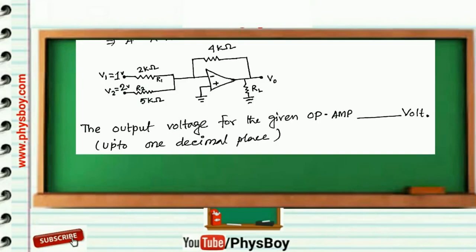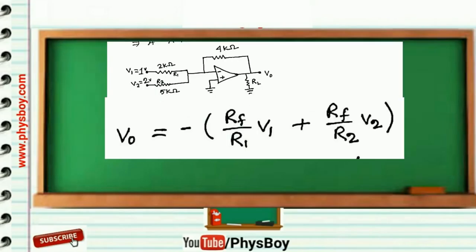You have to calculate the output voltage V0 of this op-amp circuit. This is an inverting adder circuit, so output voltage will be V0 equals minus RF by R1 times V1 plus RF by R2 times V2.